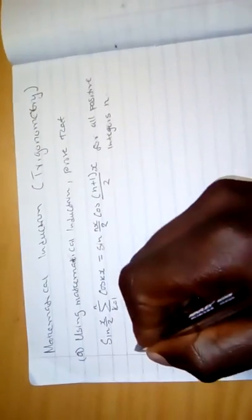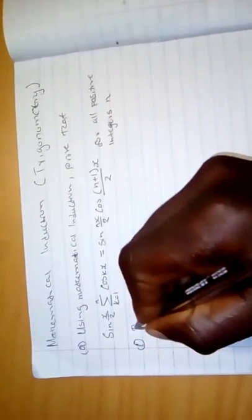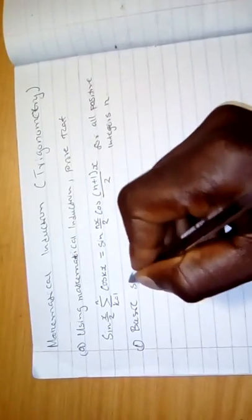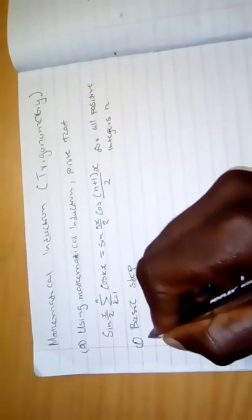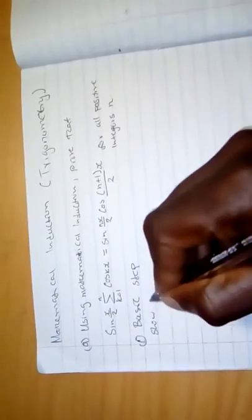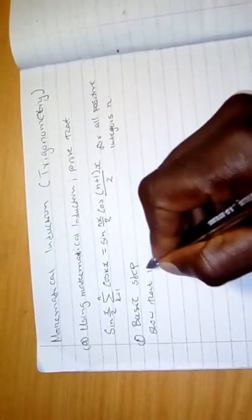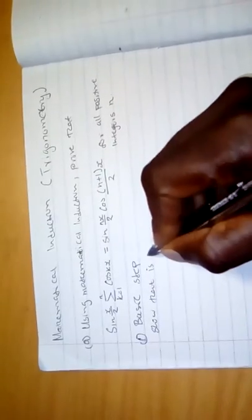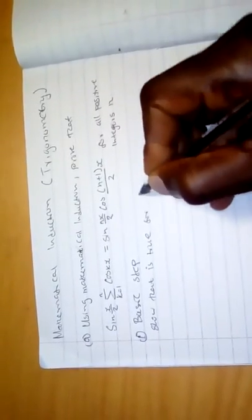What you need to do is to write the steps. Number one, we have a basic step. In the basic step you want to show that the statement is true for n equal to 1.